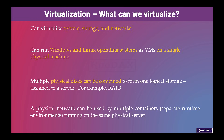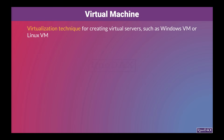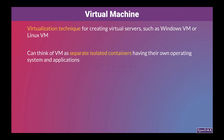Now we have a general conceptual understanding of virtualization. One of the advantages of virtualization is that we can run multiple instances of operating systems — also called virtual servers or VMs — on a single physical hardware. The virtualization technique used to create virtual servers, such as Windows or Linux servers, is called a virtual machine, also known as a VM. You can think of a VM as a separate, isolated container having its own operating system and applications. VMs are discrete, separate, isolated, self-contained, and completely independent.